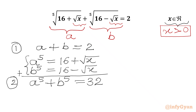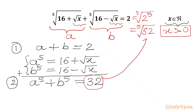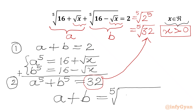Now our RHS is 2. We can write 2 as the 5th root of 2⁵, since the 5th root and the power 5 cancel out, giving us the 5th root of 32. So we have a plus b equals the 5th root of 32, and in place of 32 we write a⁵ plus b⁵.